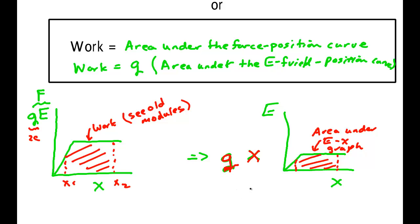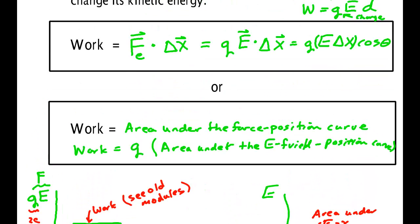We'll find out later that this area under this electric field position graph has a name too. The negative of this area is something we would call voltage or electrical potential in a little bit. Alright, so that's the idea. Find the area under the curve, or if the force is constant over the thing, just use Q times E times delta X.